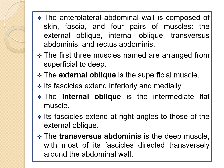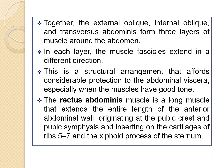The external oblique is the superficial muscle and its fascicles extend inferiorly and medially. The internal oblique is the intermediate flat muscle, with its fascicles extending at right angles to those of the external oblique. The transverse abdominis is the deep muscle, with most of its fascicles directed transversely around the abdominal wall. Together these three form the three layers of muscle around the abdomen, each with fascicles extending in different directions — an arrangement that affords considerable protection to the abdominal viscera, especially when the muscles have good tone.